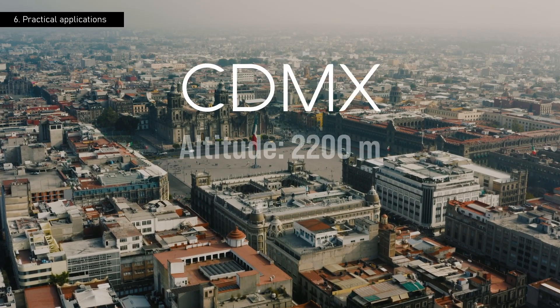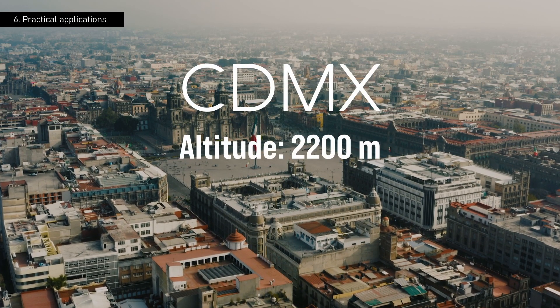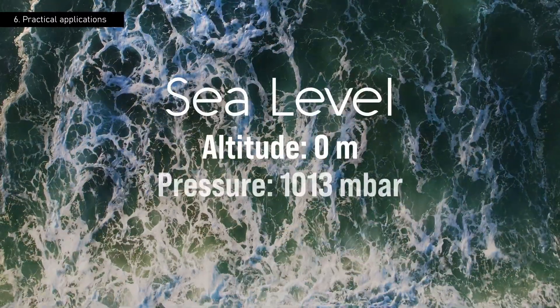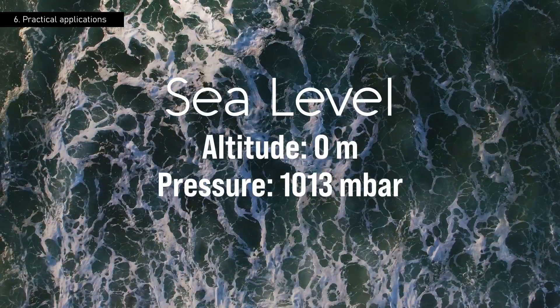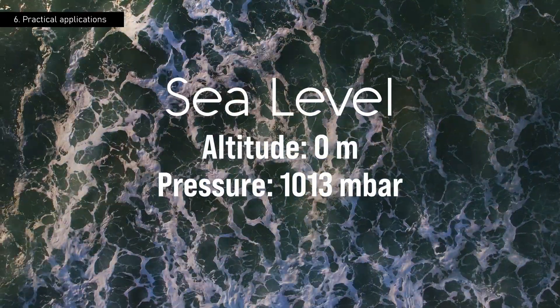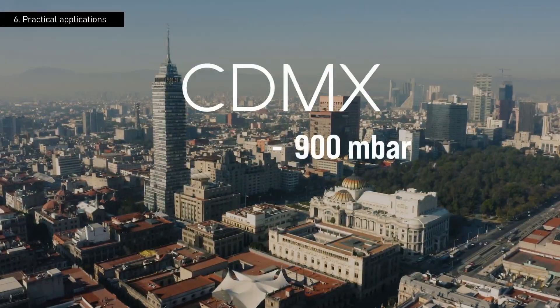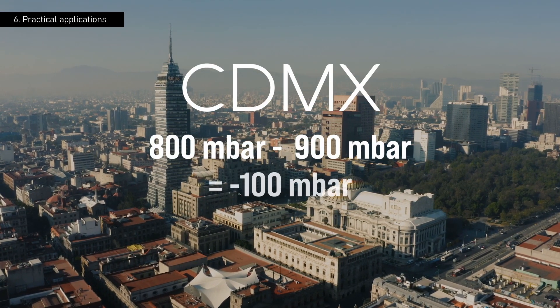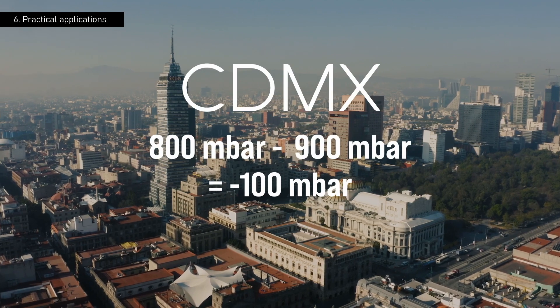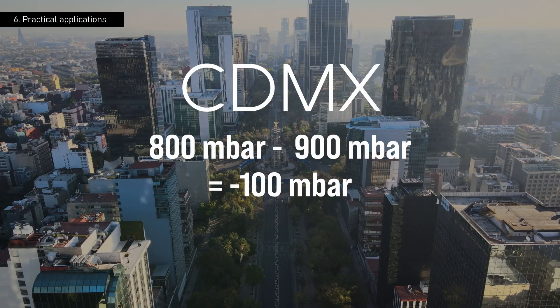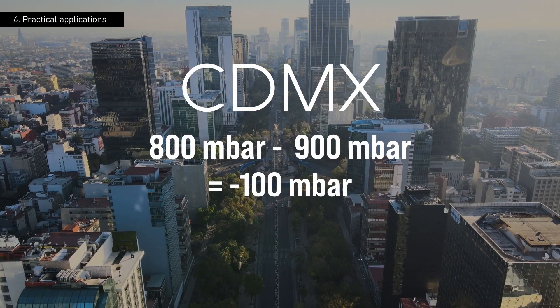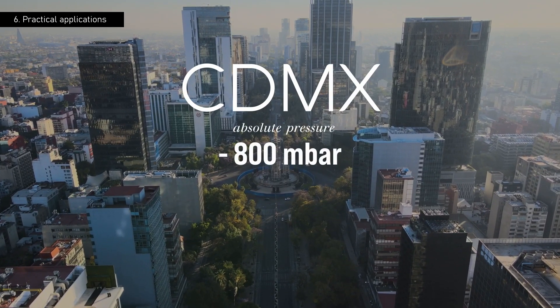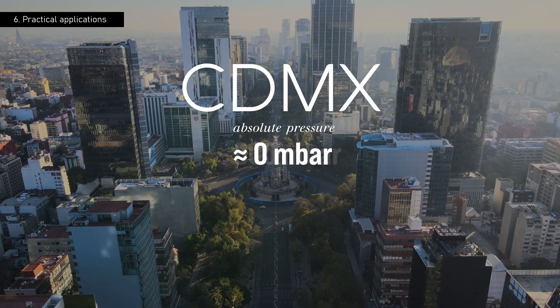First, we must understand that the atmospheric pressure in Mexico City is 800 millibars, compared to the typical 1,013 millibars at sea level. Attempting to generate a relative vacuum of minus 900 millibars in Mexico City, with an atmospheric pressure of 800 millibars, would involve trying to reach a pressure lower than absolute zero inside the chamber, which is physically impossible. We could reduce the 800 millibars of atmospheric pressure to nearly zero, but never beyond this.